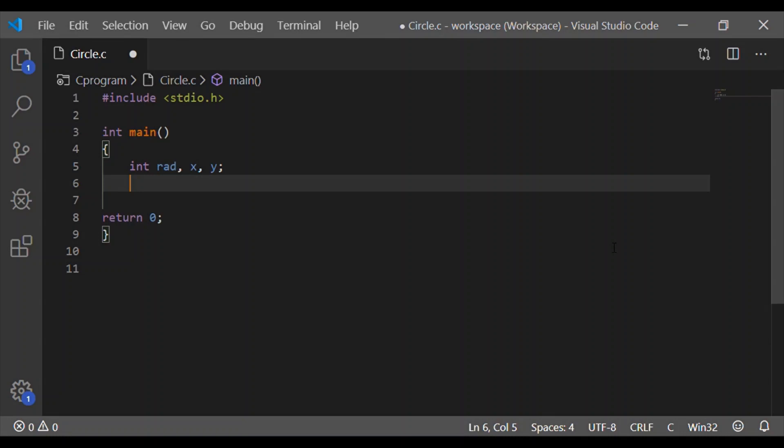Let us first declare the variables: integer as rad for radius of the circle, and x and y which are the coordinates for a point.